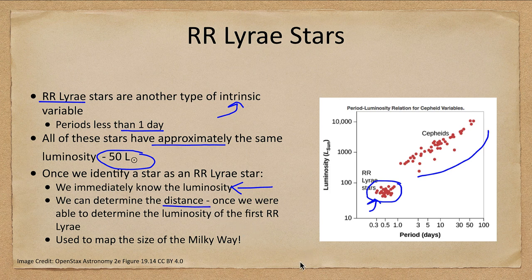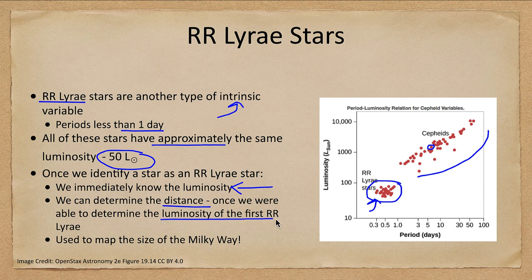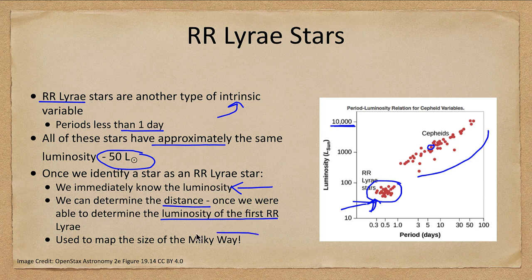As soon as you can calibrate this — you need to know the distance to one of these stars to make a calibration and establish where the actual luminosity is; otherwise, this can be adjusted up and down a little bit. So we were able to use this once we could get the luminosity of one RR Lyrae star, and anywhere we can see them, we are able to measure distances. This is important because some Cepheids are 10,000 times brighter than the sun and can be seen over vast distances, while RR Lyrae stars at about 50 times the brightness of the sun have been used to map the size and distribution of the Milky Way.